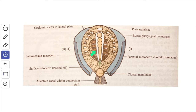Next, we'll see about the paraxial mesoderm. It is derived from the ingressing epiblast cells which migrate through the primitive node and the rostral part of the primitive streak. It extends cranially from the primitive streak to the pre-caudal plate.